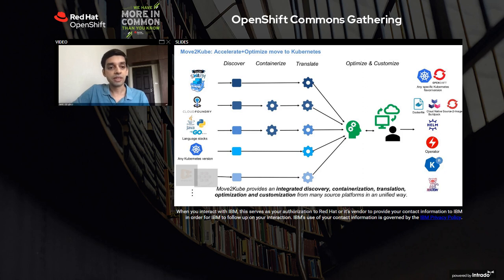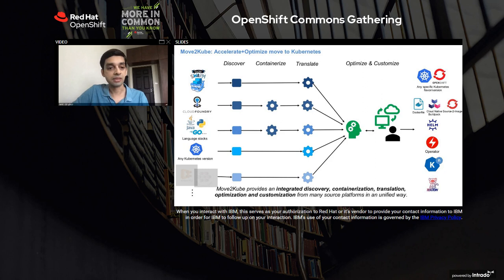Move2Kube tries to accelerate that process by reducing those skill requirements and the time required to perform replatforming activities. Move2Kube starts with any of these source platforms, first discovering your deployment specification. If you've got containers running on Docker Swarm or an application running on Cloud Foundry, it will discover everything needed to specify that deployment and translate it into a Kubernetes specification. In cases where the source platform is not already containerized, such as Cloud Foundry or native Java applications, it will actually containerize them for you.